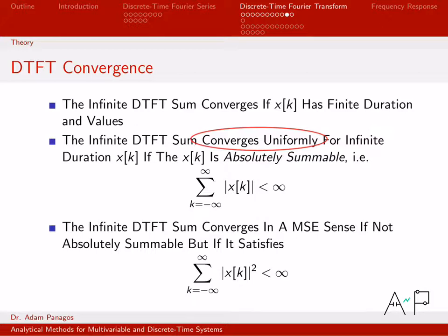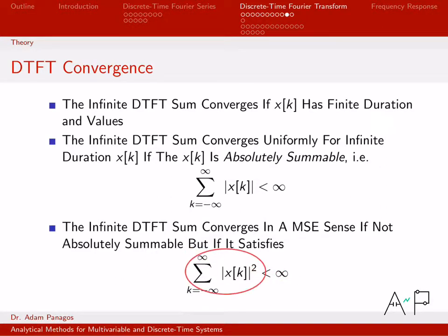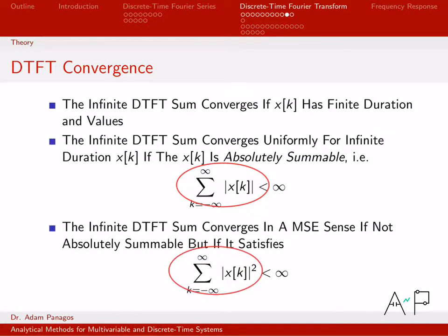When x of k is absolutely summable, that implies a certain type of convergence — namely, it converges uniformly. Absolutely summable time-domain signals have uniformly convergent DTFTs. Similarly, instead of taking the magnitude and summing, you can take the magnitude squared and sum over all time. If that is also less than infinity, the DTFT converges in a mean square sense. Just be aware: short signals are easy to deal with; for infinitely long signals, you can perform these two operations to confirm that your DTFT converges.